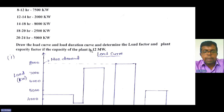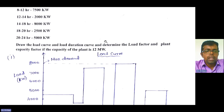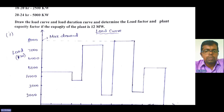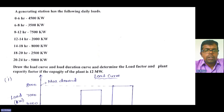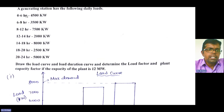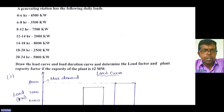The capacity of the plant is 12 megawatt. This is a simple problem — maybe a 5-mark question. First, they asked us to draw the load curve. From the data, easily you can draw it. We have previously solved how to draw the load curve and load duration curve.